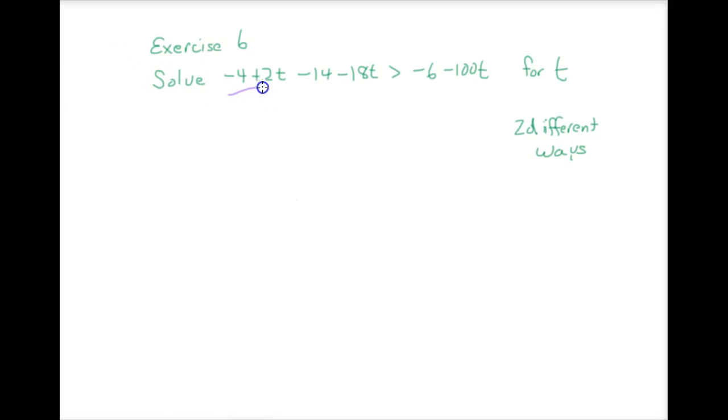Honestly, I have to say this left-hand side of the equation is a mess. I wouldn't even begin to start on this myself until I cleaned it up. So first thing I'm going to do is clean it up a little bit. This is negative 18, negative 4, and negative 14, and then 2 minus 18 is negative 16t. And now I have something that's almost worth looking at. Negative 6 minus 100t.